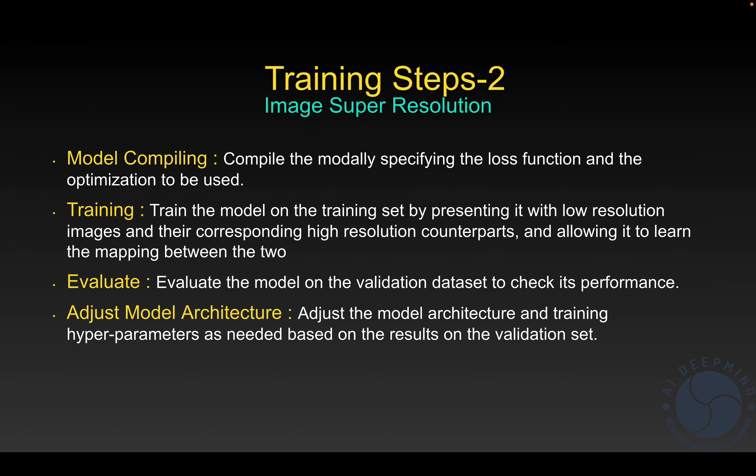The fifth step is model compiling. Once we have built our model, we need to compile it by defining a loss function and an optimizer. We choose which loss function to use for that model and which optimizer — whether it's the Adam optimizer, stochastic gradient descent, or whichever is most suitable for the specific model.